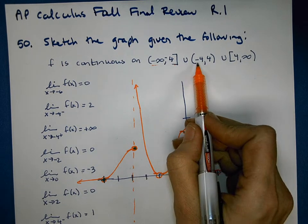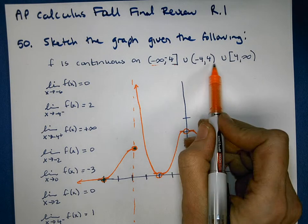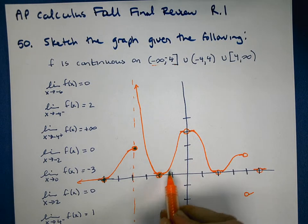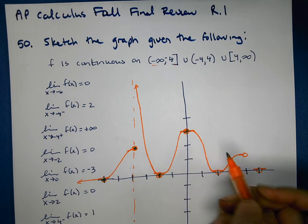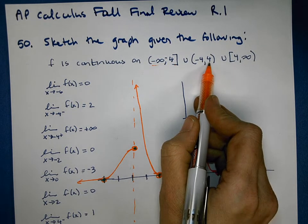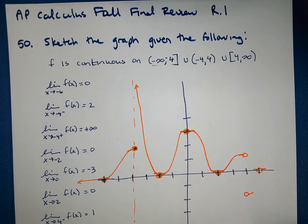And it says it's continuous, not including negative 4 or 4, but everything in between. So there cannot be a hole here. I'm going to fill that in. There cannot be a hole there, or it wouldn't be continuous. There cannot be a hole here. But this one says it's not continuous at 4 itself. So from below, I'm leaving that one open.